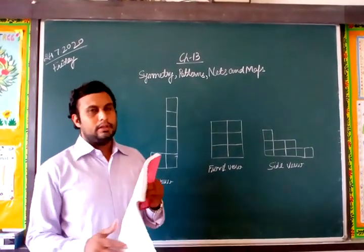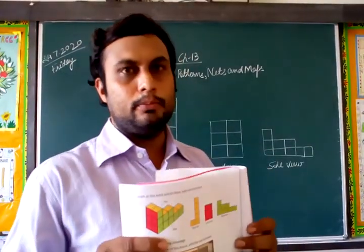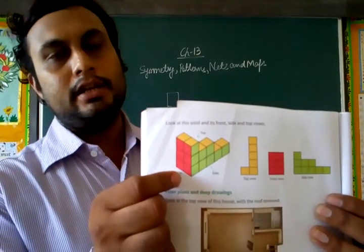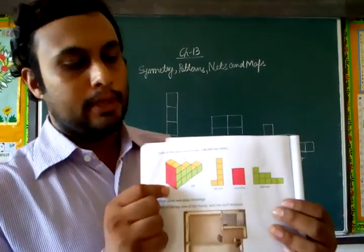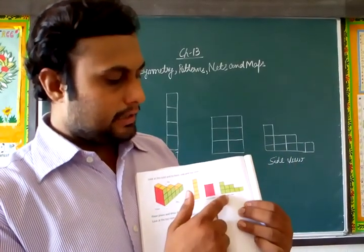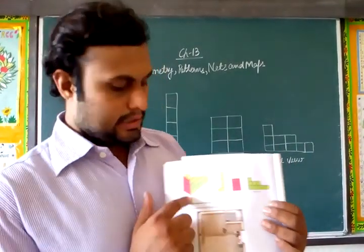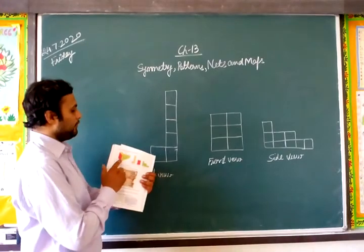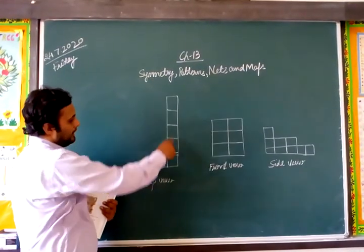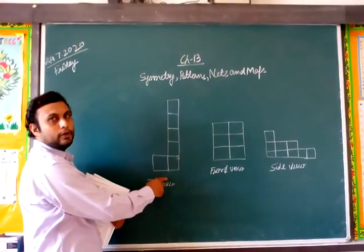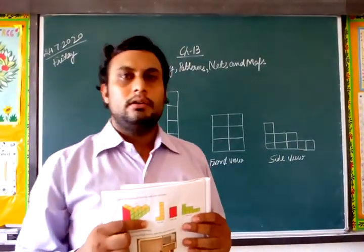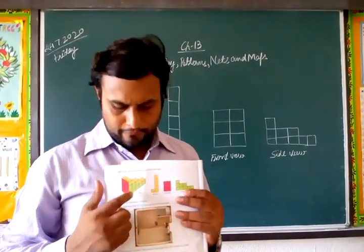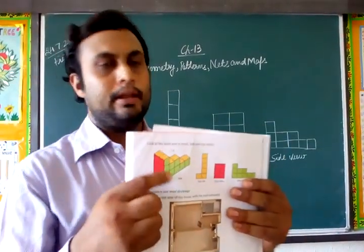Now, in front of you there is a figure in your book. This is the three-dimensional figure. If we see this figure from the three sides — from the top side, front side and the side view — this is the three-dimensional shape. Now if we see this shape from the top, it will look like this. This is the top view — when you see any surface from the top, it is called the top view.